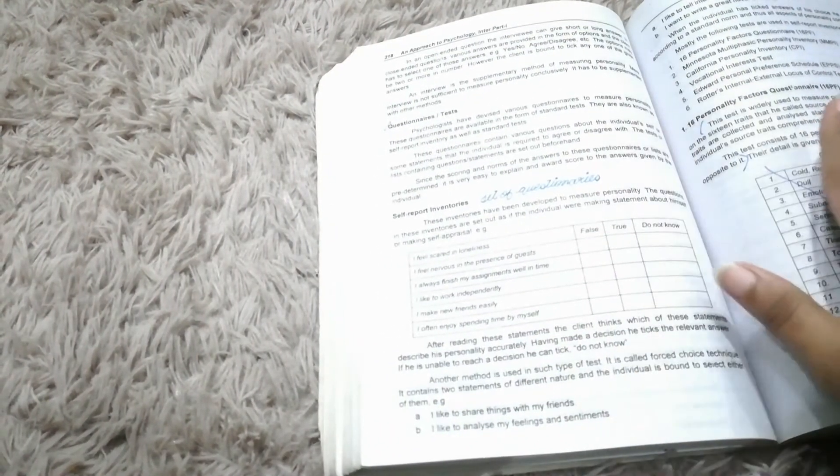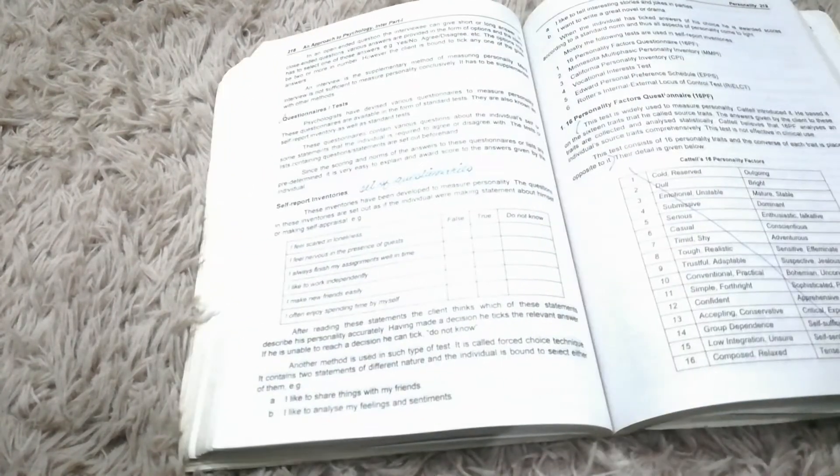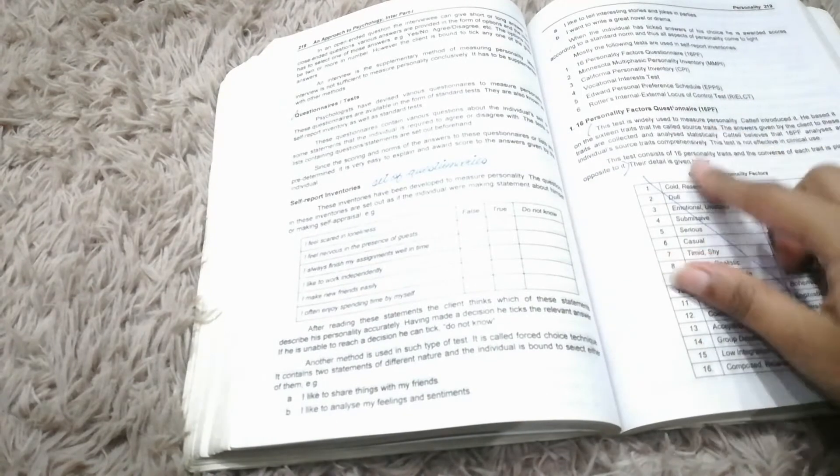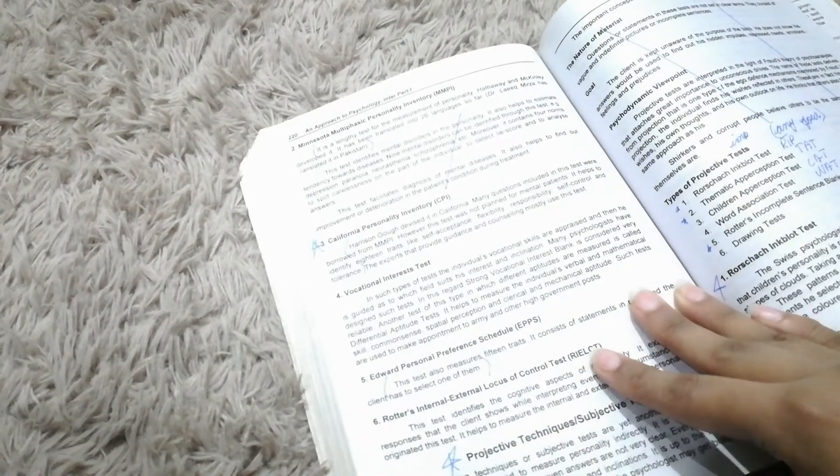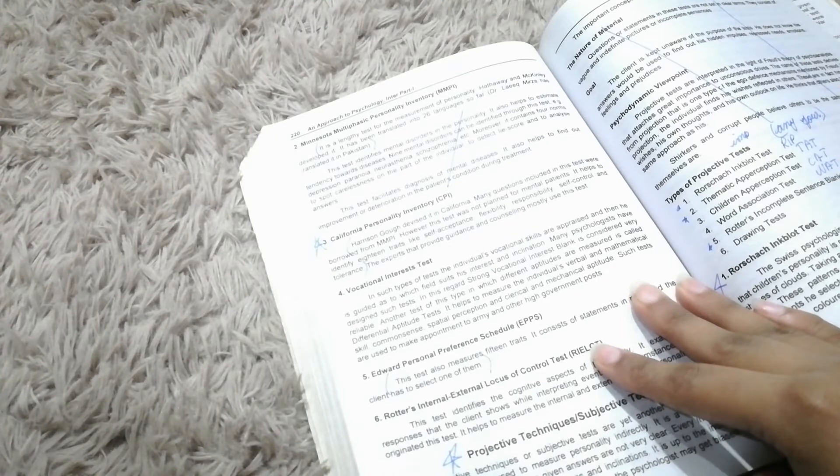Then question and test. This you should write it. 16 Personality Factors - this is paragraph.